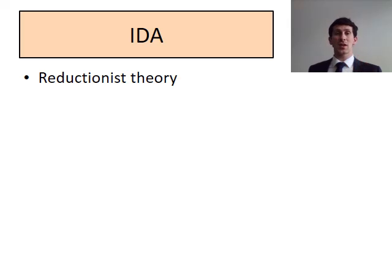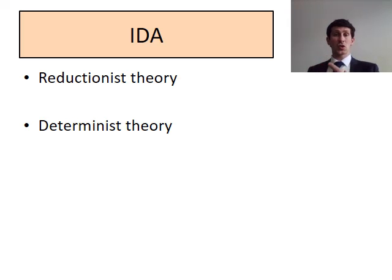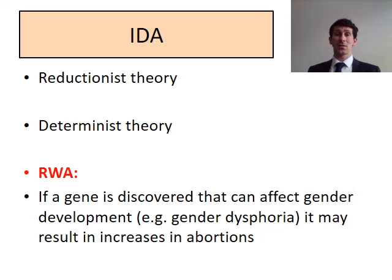Finally, there are IDA points to consider. The biological theory is reductionist because it ignores psychological, psychosocial, and social learning theory explanations. It is also a determinist theory — it states that biology, genes, and hormones determine your gender, ignoring the idea of free will. There is also a real-world application: if a gene was discovered that could affect gender development — for example, causing gender dysphoria or gender identity disorder — it could result in an increase in abortions, which is a socially sensitive issue raising questions about whether this research is beneficial.